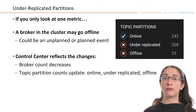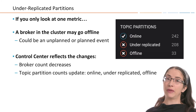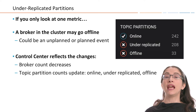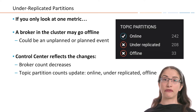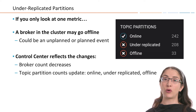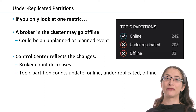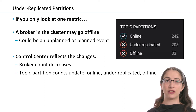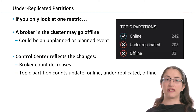The reasons for under-replicated partitions could be that a broker went offline — maybe intentionally during planned maintenance, or maybe something just crashed. It could be a problem across the entire cluster, such as lack of resources or lack of balance. It could be a problem with one broker — maybe a hardware problem, or a noisy application that took away all the resources. Whatever it is, this is a sign that you need to go in and start investigating.